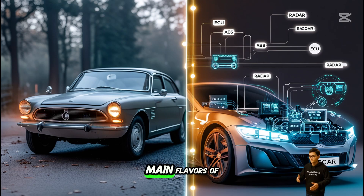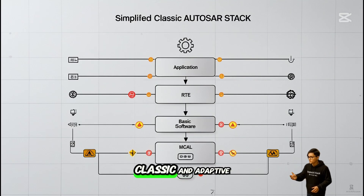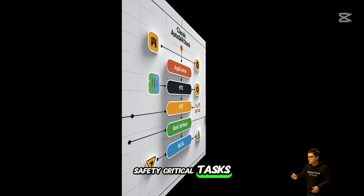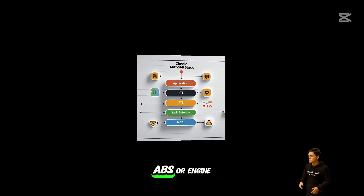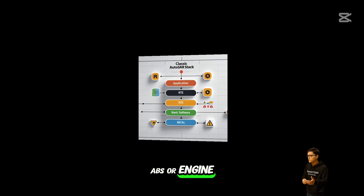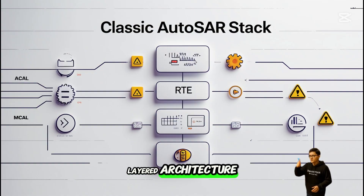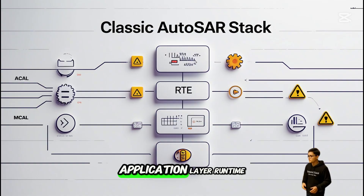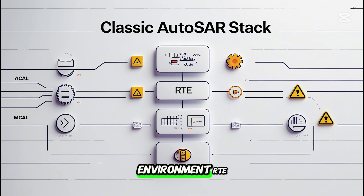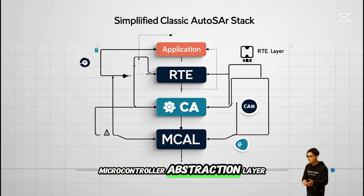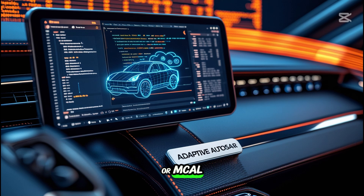There are two main flavors of Autosar: Classic and Adaptive. Classic Autosar is used for real-time, safety-critical tasks like airbag control, ABS, or engine management. It runs on microcontrollers and uses a layered architecture: application layer, runtime environment (RTE), basic software (BSW), and the microcontroller abstraction layer, or MCAL.